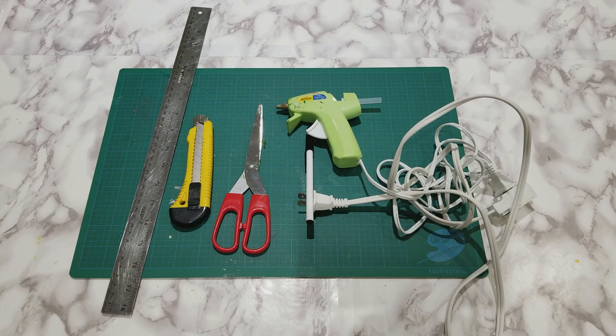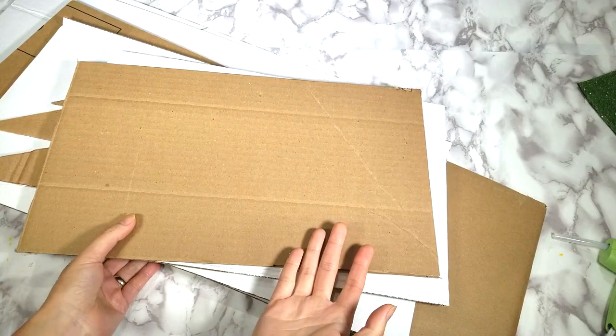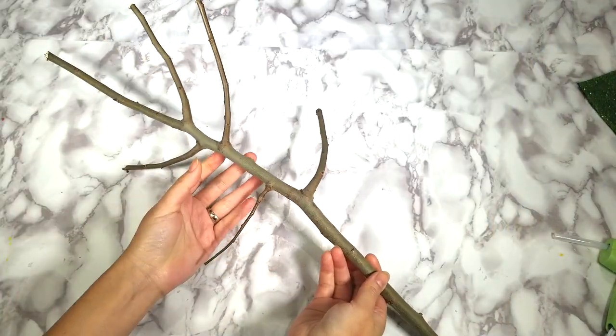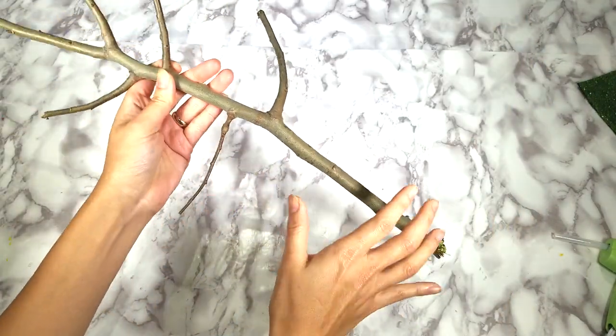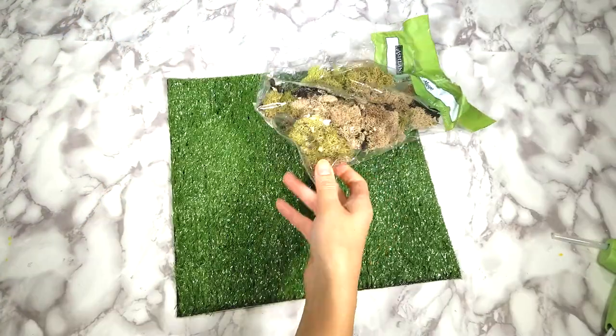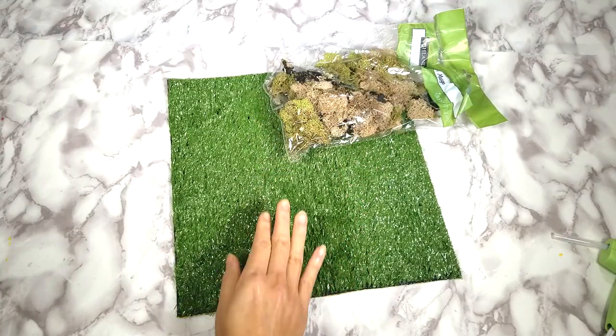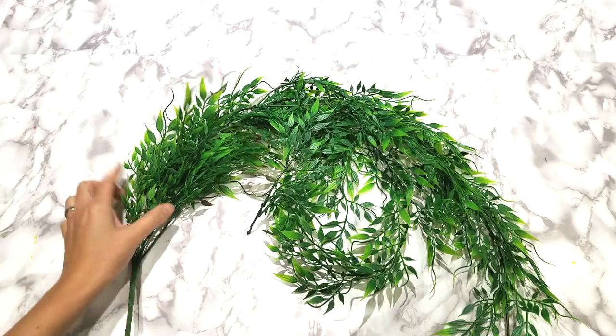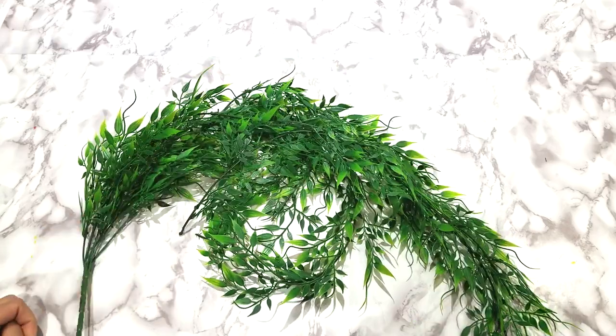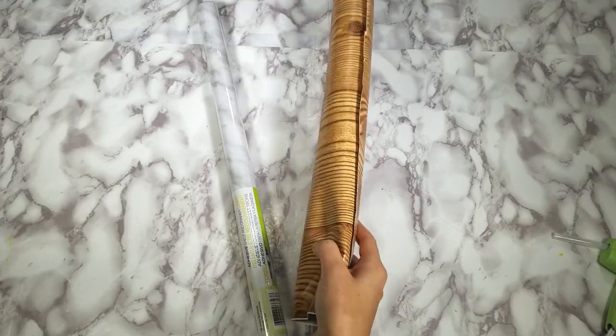For materials we need some cardboard or you can start off with a carton box. For a tree I use this branch about 18 inches long from my backyard with some little branches as well. One square of the grass tile and moss and some artificial leaves you can get from the dollar store or Michaels. Contact papers with a pattern of your choice.